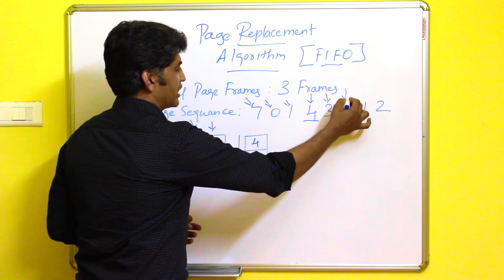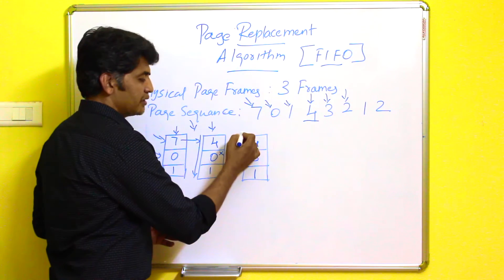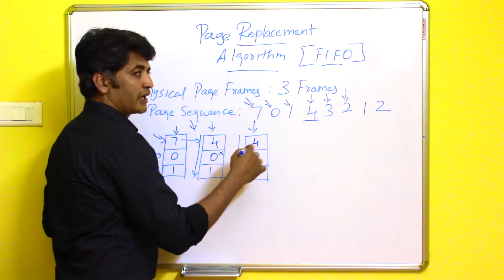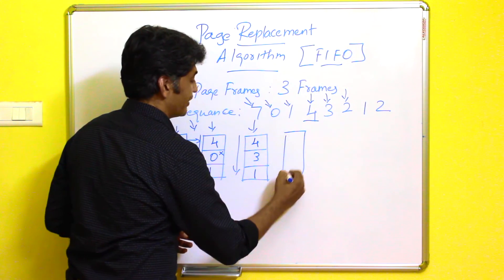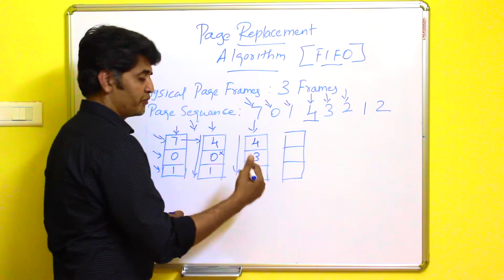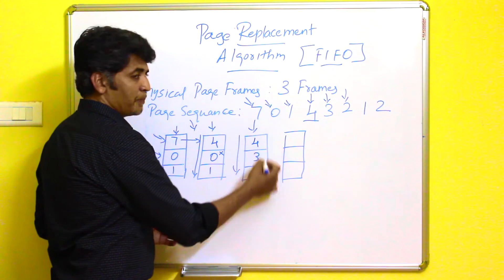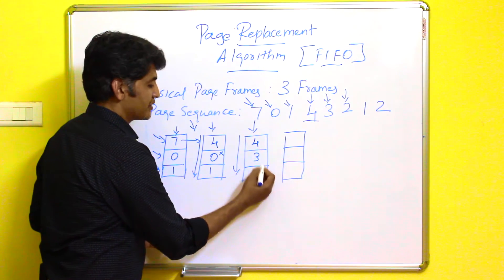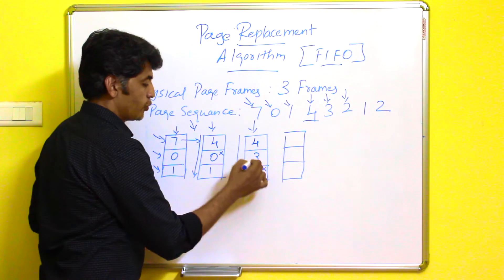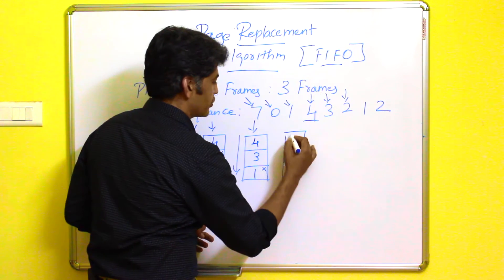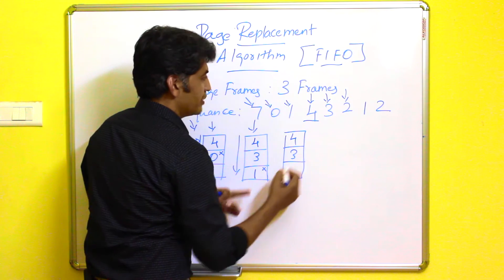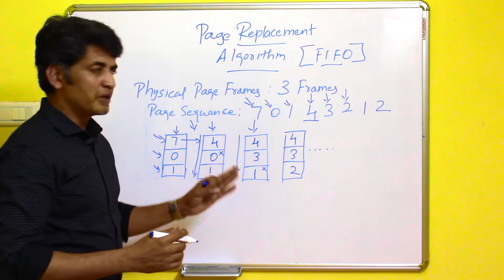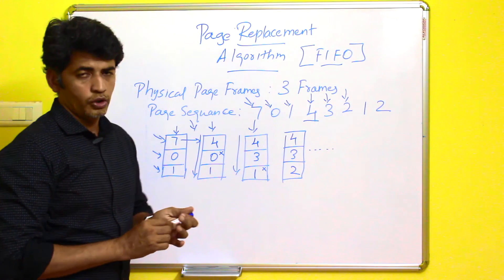The next required page is two. Again the operating system will verify whether the page is there or not — it is not there, so again a page fault will occur. It will verify which page came first among all three pages. Compared to all three, page one came first. So page one will be replaced by the newer one — two. This is how page replacement happens with the help of the First In First Out algorithm.